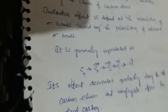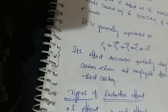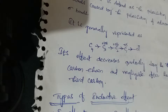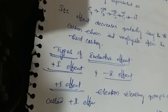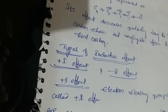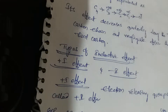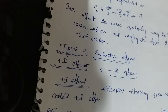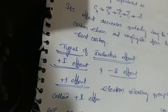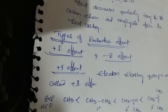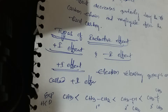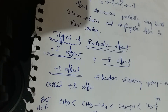The inductive effect is a permanent effect. These inductive effects are classified into 2 types: positive inductive effect and negative inductive effect. Positive inductive effect — also called the +I effect — means electron-releasing groups are called positive inductive effect.